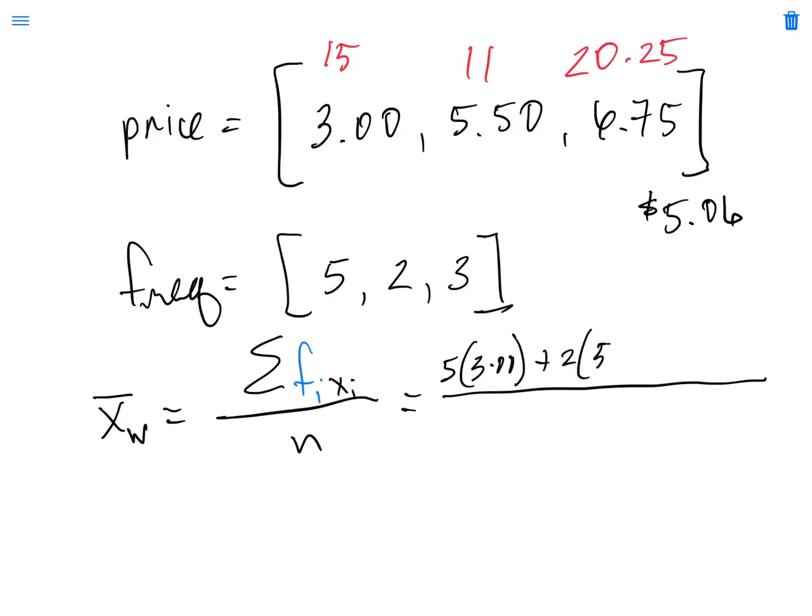Five times three dollars plus two times five fifty plus three times six seventy five. When we add all that up together, we get forty six twenty five.